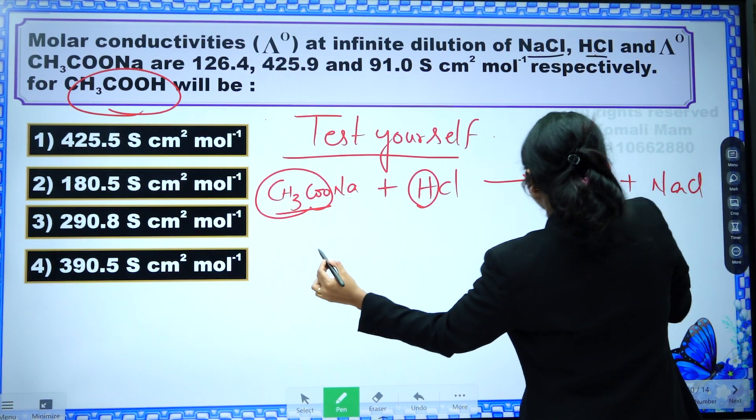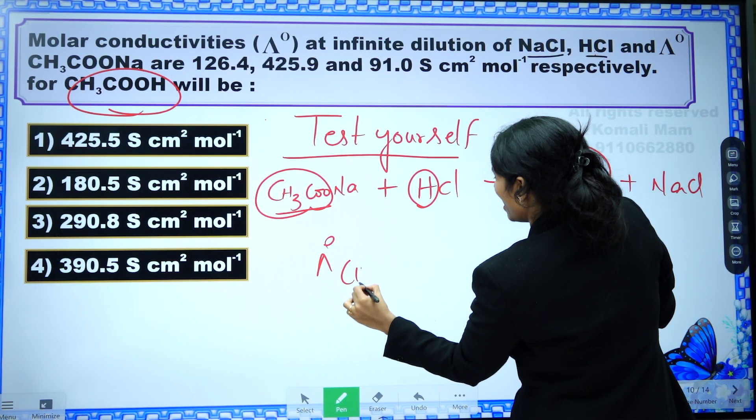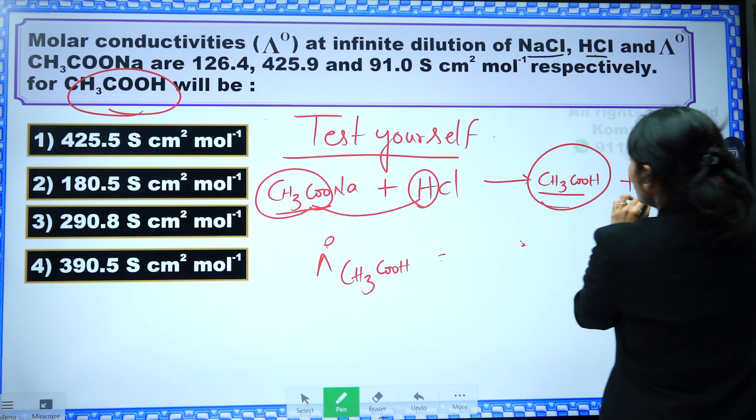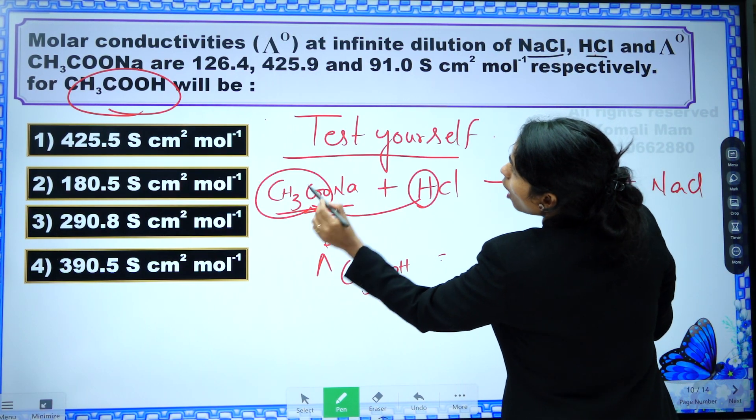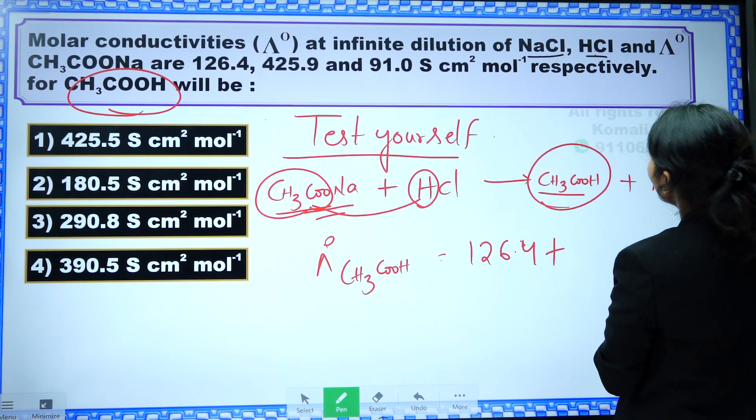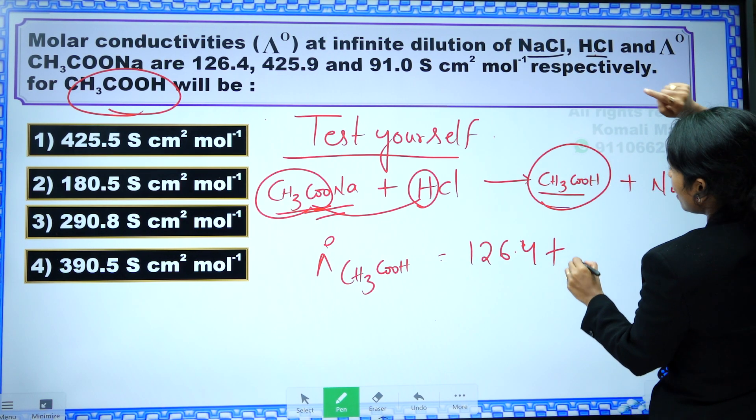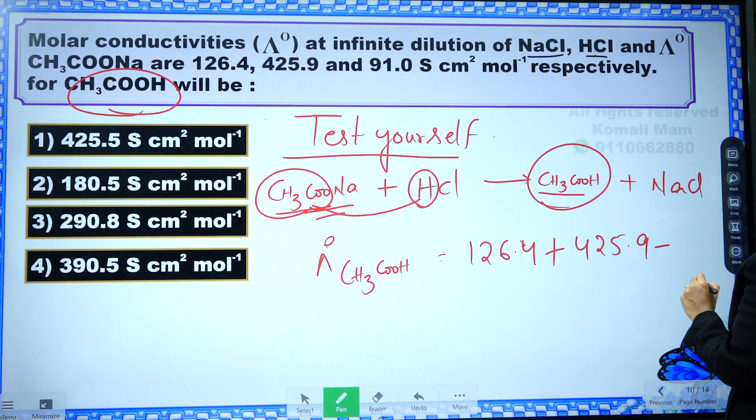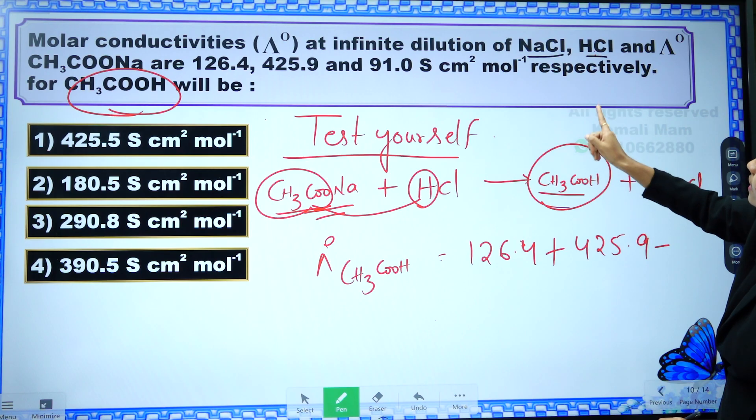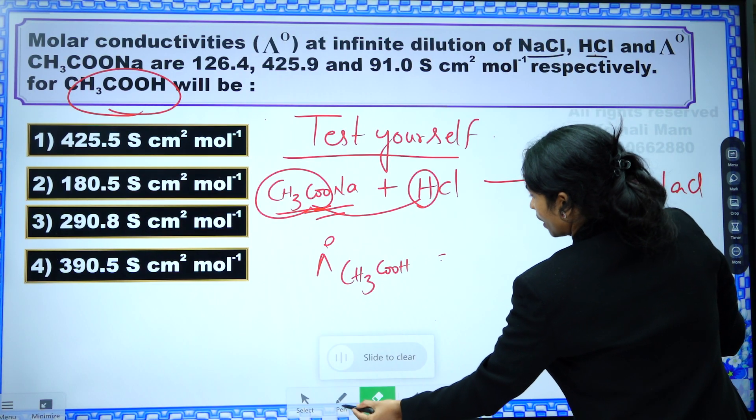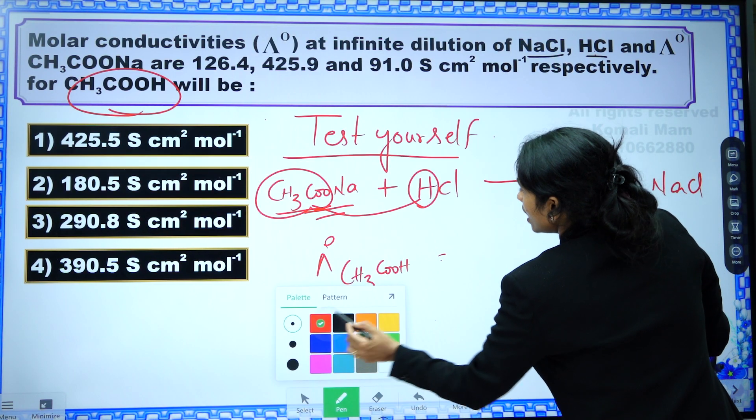So we want this one molar, this question we have done I think right? No, the sum of these two minus this. This one, how much is given in the question? What is the formula? Limiting molar conductivity.